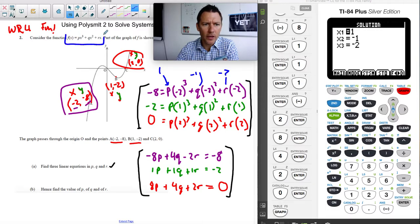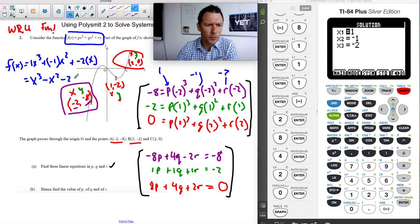So this equation becomes f of x equals one x cubed plus negative one x squared plus negative two x. Cleaned up, we can call that x cubed minus x squared minus two x.